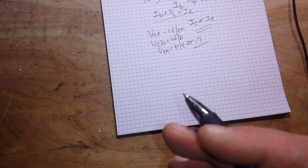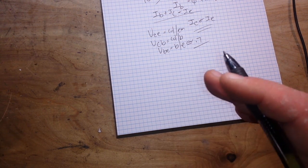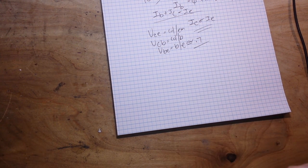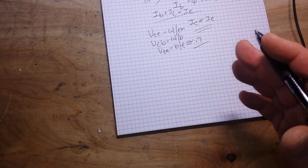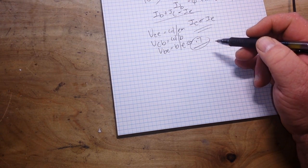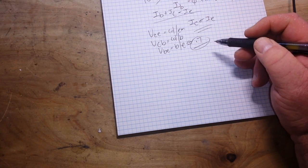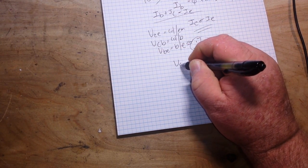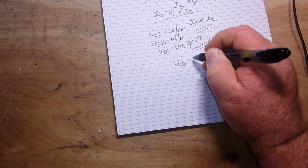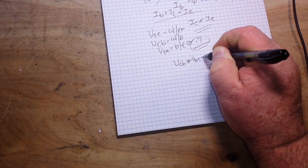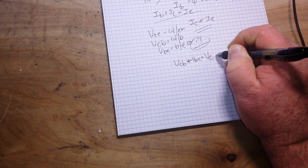We need to make sure that the base emitter junction is biased in the forward direction, so that only the intrinsic voltage drop across the PN junction appears, which is that 0.7 volts. We don't want anything else. So then we have our conservation of potentials, which is VCB plus VBE equals VCE.